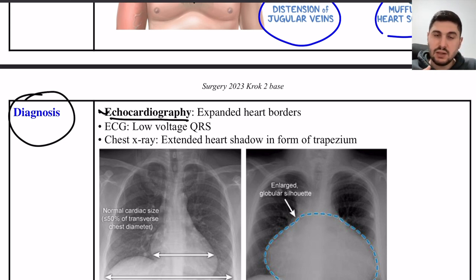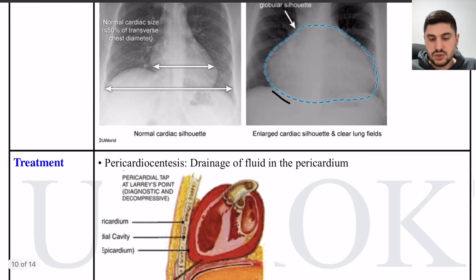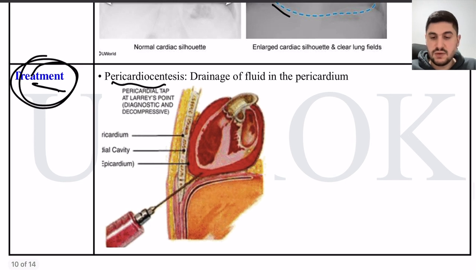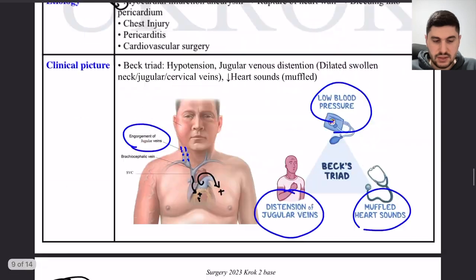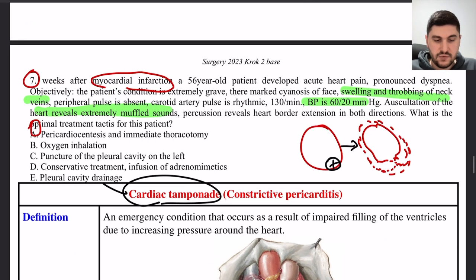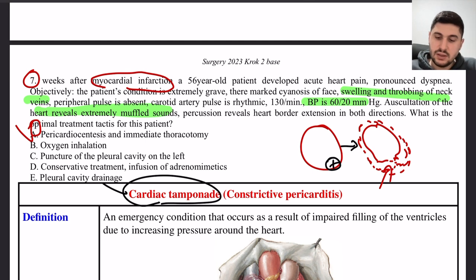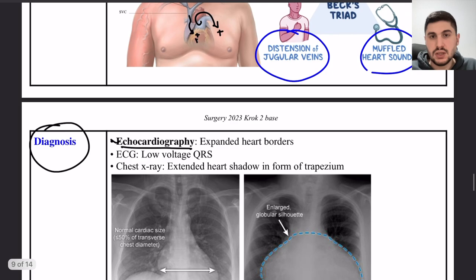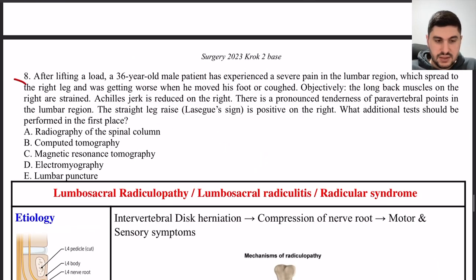The treatment is pericardiocentesis — drainage of the fluid from the pericardium — just as we drain a hemothorax. Additionally, to fix the ruptured area from the myocardial infarction, thoracotomy is also needed. Summary: jugular vein distension, muffled heart sounds, low blood pressure → cardiac tamponade → pericardiocentesis and thoracotomy.